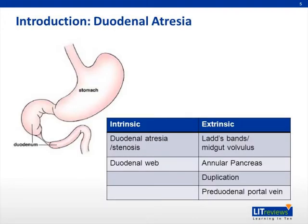Duodenal atresia is found in about one per 5,000 live births, and it accounts for half of all small intestinal atresias. Congenital duodenal obstruction may be complete or partial, intrinsic or extrinsic.